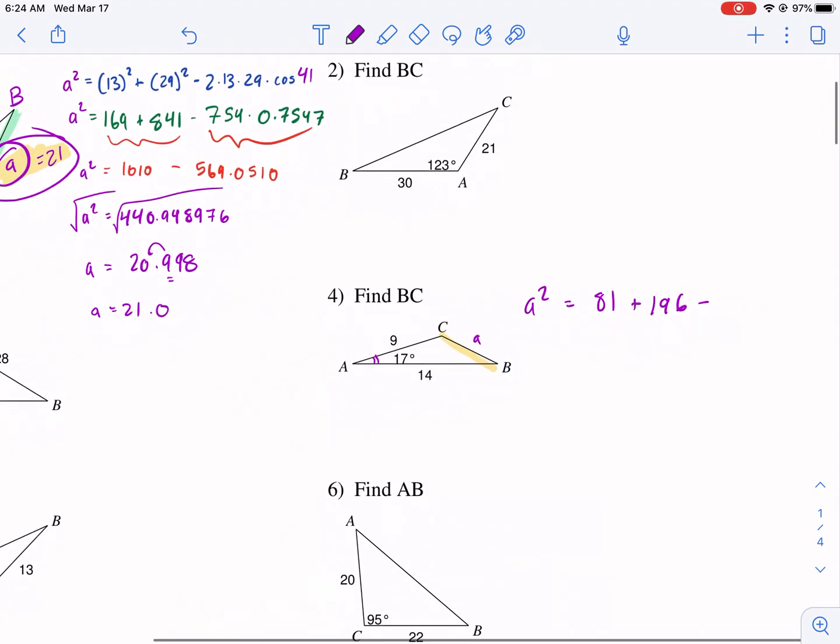I'm going to call this 81 plus 14 squared is 196. Minus, and now I'm going to type in 2 times 14 times 9, and I get 252. And then this is times the cosine of 17, times, which is about 0.956. Now that's rounded. I'm having the whole thing stored on my calculator. So the first thing I'm doing is I'm multiplying that by 252 to get minus 240.988. Again, that's rounded. I have the whole thing stored. I'm going to subtract this from 196 and 81, and I get A squared equals 36.012.